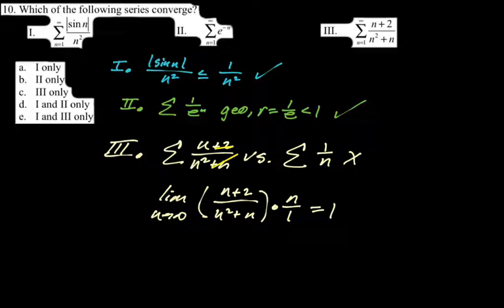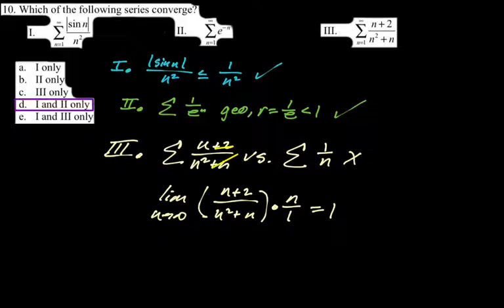So we're looking for things that converge, and the answer is one and two. I actually get a lot of multiple choice questions wrong by answering the wrong question — the question says converge, and I'll answer diverge. So pay attention. Next up.